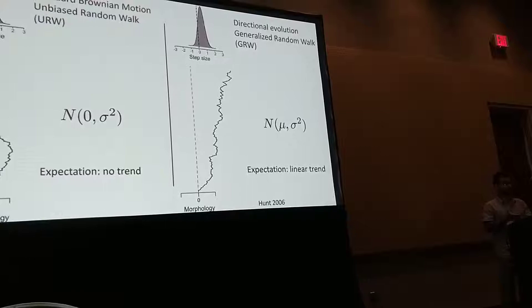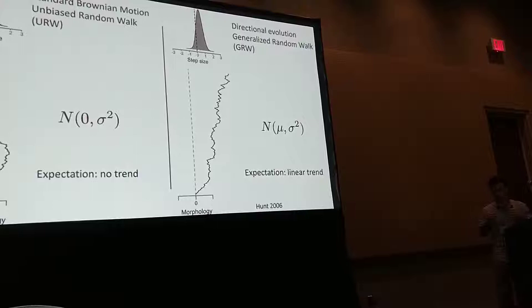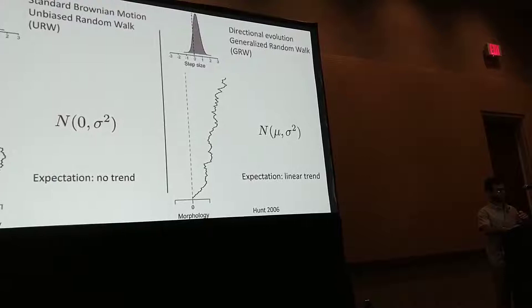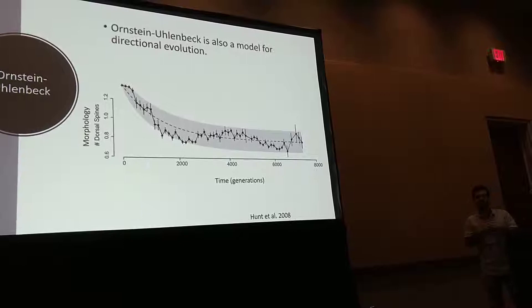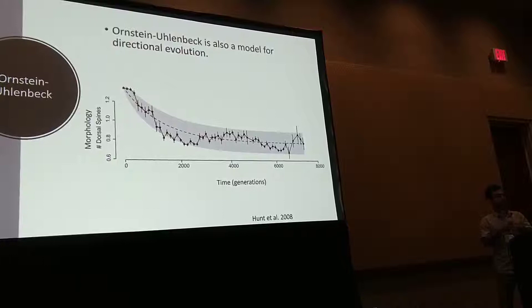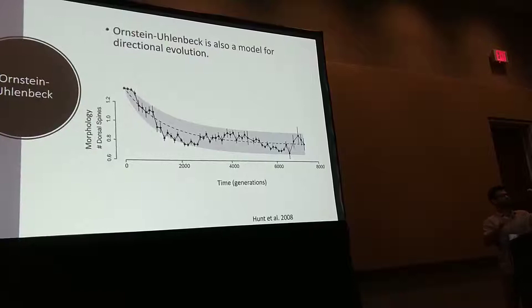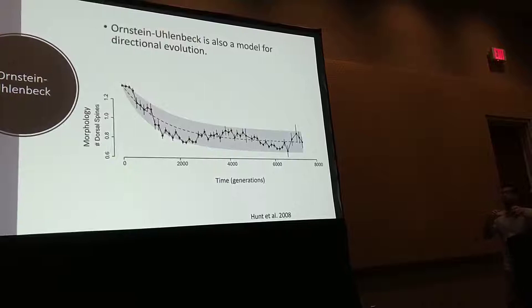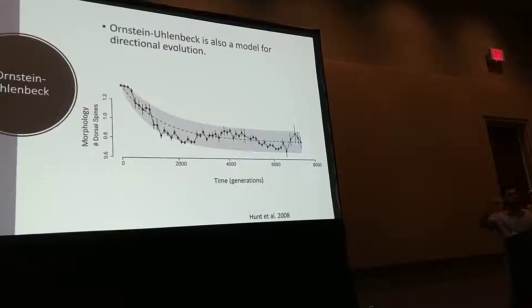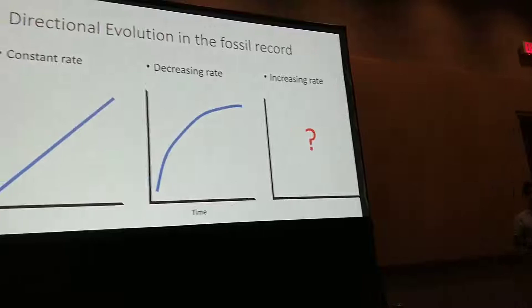One important thing about gradual directional evolution is that the expectation is a constant rate of evolution — a linear trend. By rate of evolution, I mean the difference between ancestral and descendant populations in a given time. There is also another model for directional evolution: the Ornstein-Uhlenbeck model. This model is directional only in its initial portion, when the trait is very far from the optimum. As it approaches the optimum, the rate of evolution decreases and the trait stabilizes close to that optimum.